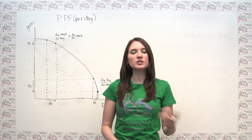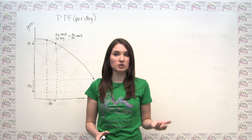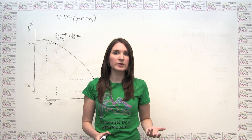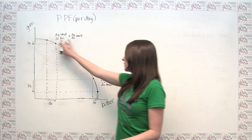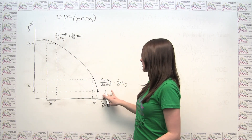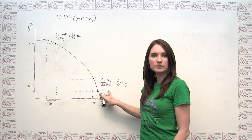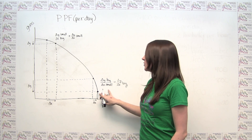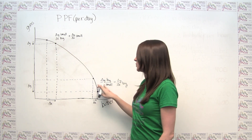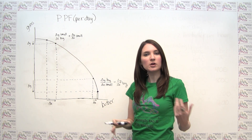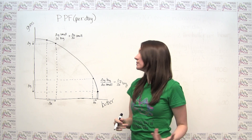It's not always the case that production possibilities frontiers are straight lines. In fact, a more reasonable assumption is that production possibilities frontiers have this bowed-out shape that we see here. The reason for this is because of the particular nature of the slope of this type of curve, so let's start by trying to understand what's going on with the slope.